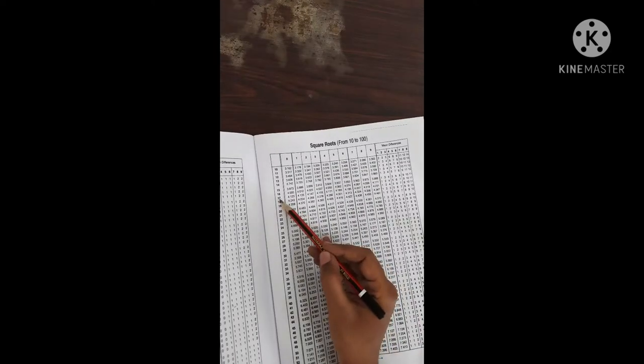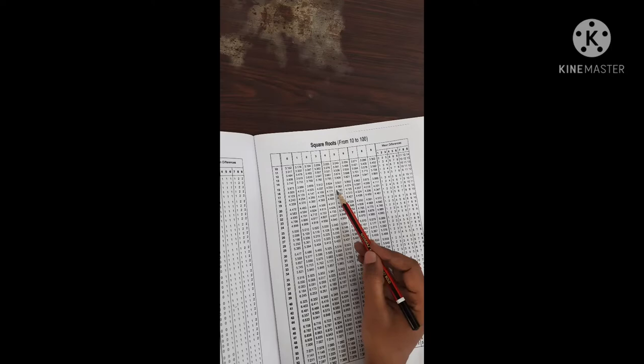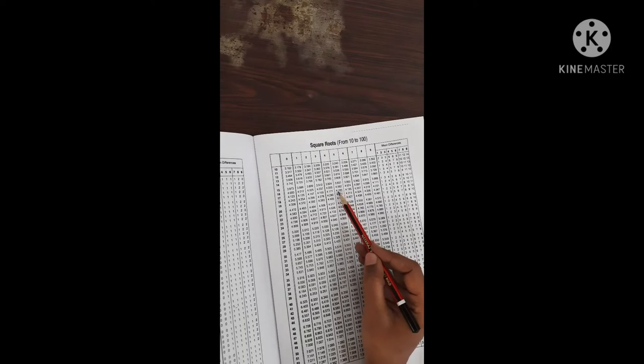So 17 is over here, 17.5, this is the fifth, so how much it is? 4.183. So I'll just write here 4.183.